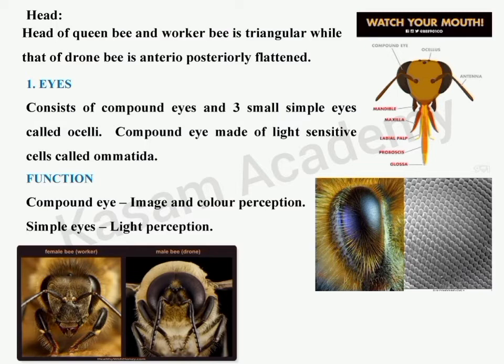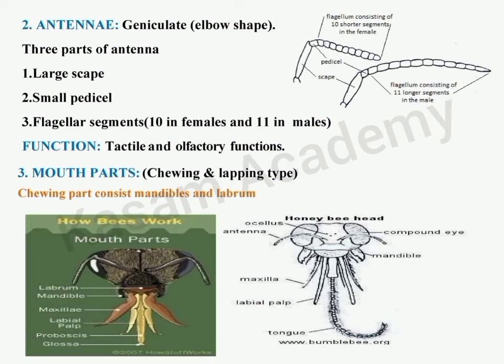The compound eyes function in image and color perception, while the simple eyes are for light perception. Coming to the antennae, they are geniculate — that is, elbow-shaped — present in a pair, seated in a socket-like membrane in the head. Like other insects, they have a large scape, small pedicel, and flagellar segments. The flagellar segments are 10 in females and 11 in males.